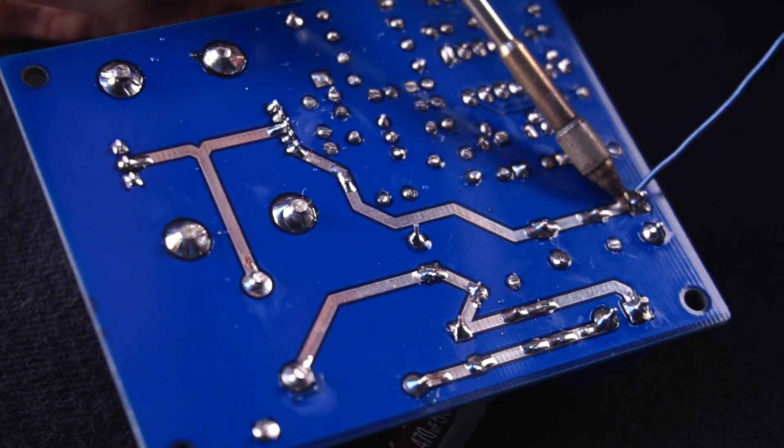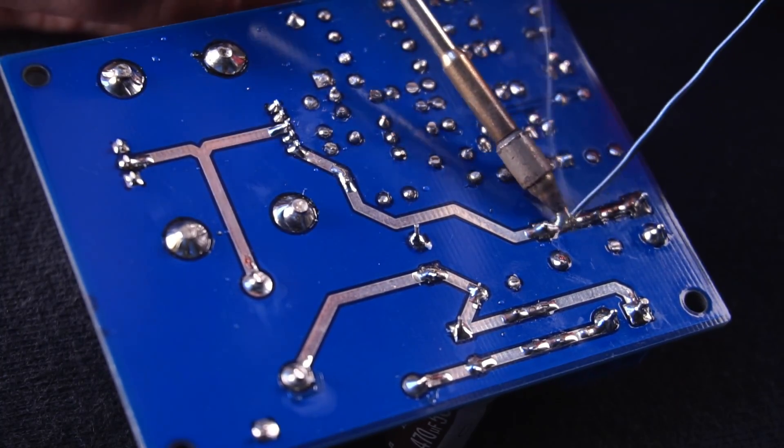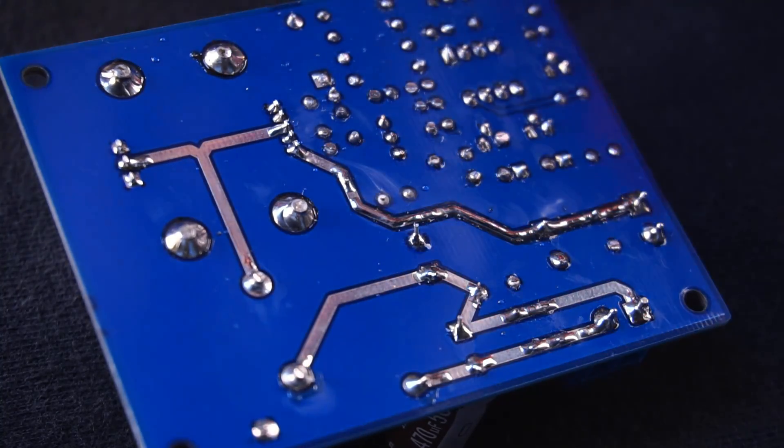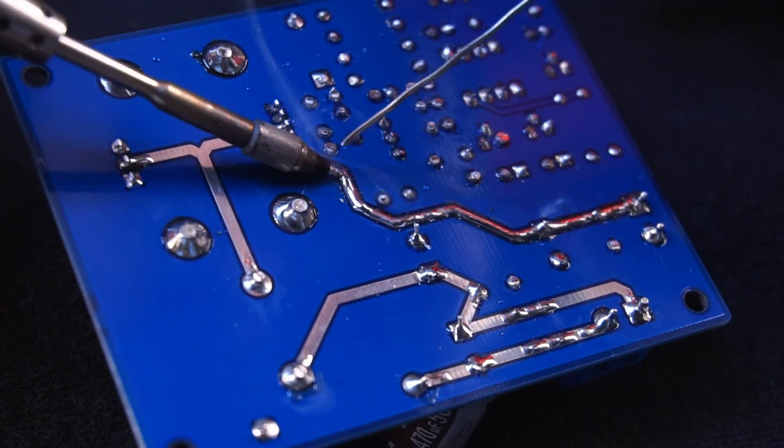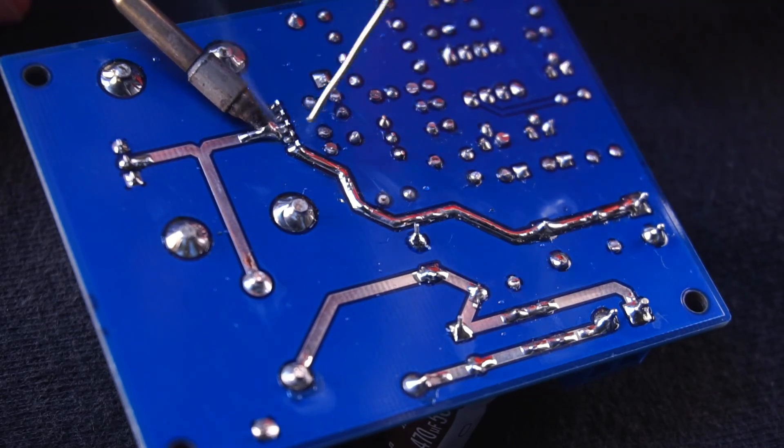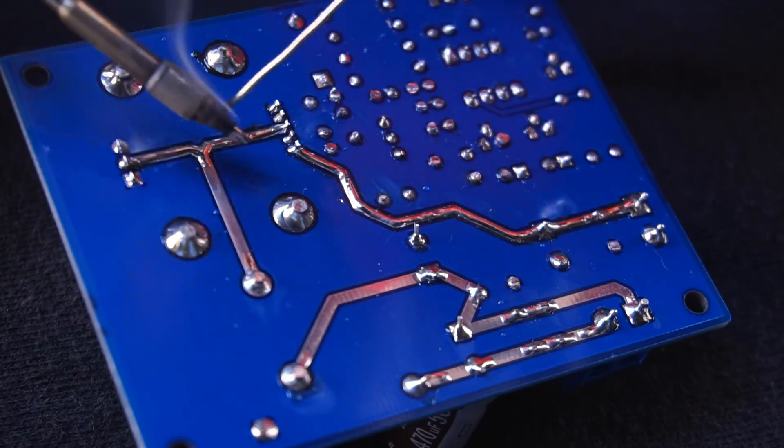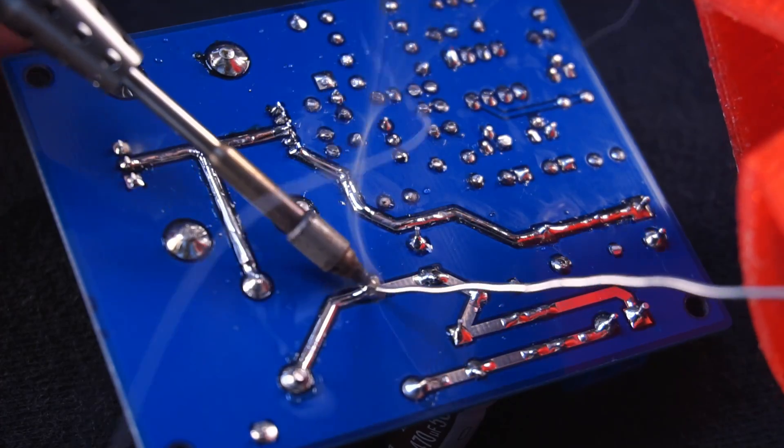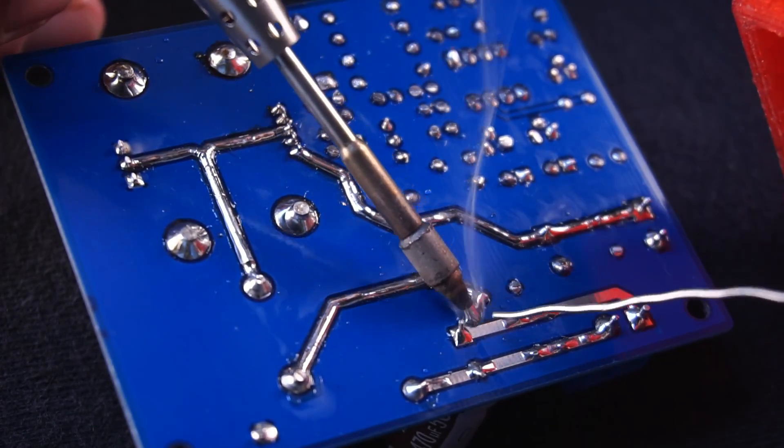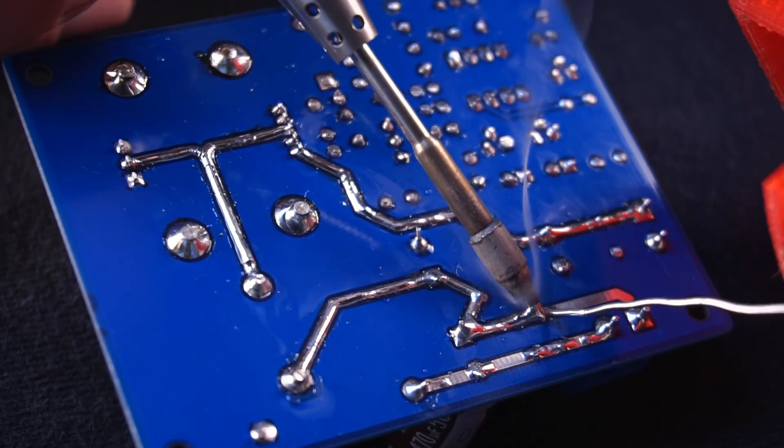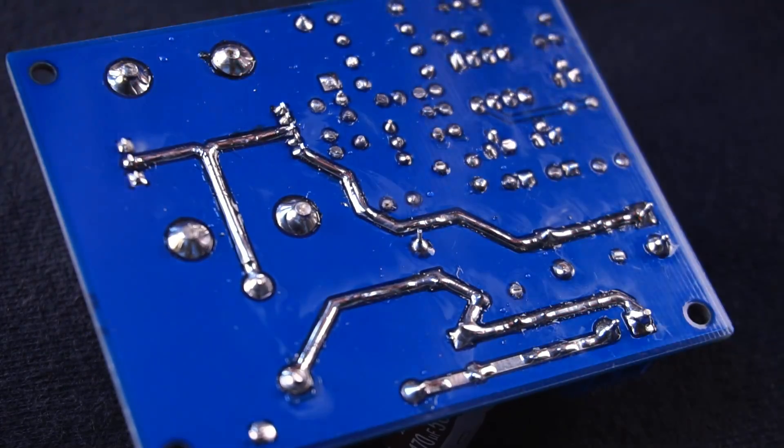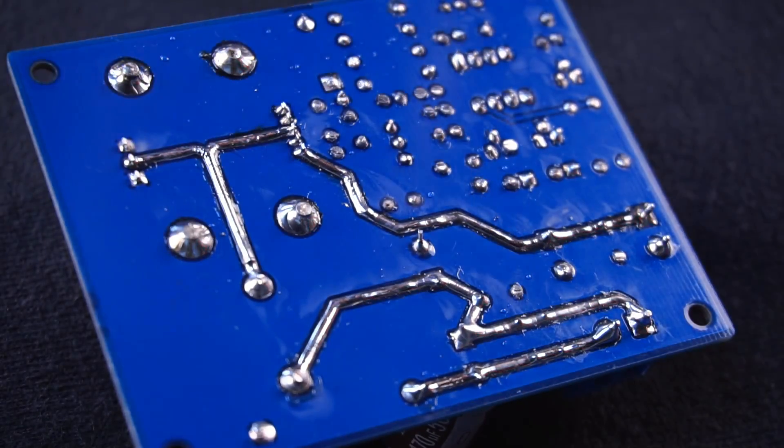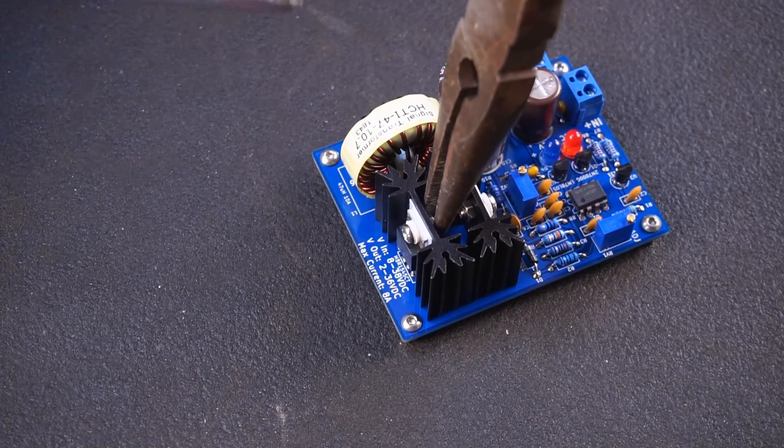With all the components installed there is one last job. On the underside of the board there are a couple exposed traces that need to be tinned with solder like this. These traces carry the high current between the input and output. So doing so prevents the otherwise thin traces from overheating under heavy load. Oh and don't forget to tighten the screws now.